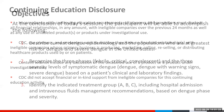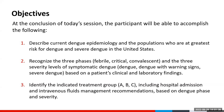At the conclusion of the session, participants will be able to: describe current dengue epidemiology and the populations at greatest risk for dengue and severe dengue in the United States; recognize the three phases — febrile, critical, convalescent — and the three severity levels of symptomatic dengue: dengue, dengue with warning signs, and severe dengue, based on clinical and laboratory findings; and identify the indicated treatment group A, B, or C, including hospital admission and IV fluids management recommendations, based on dengue phase and severity.